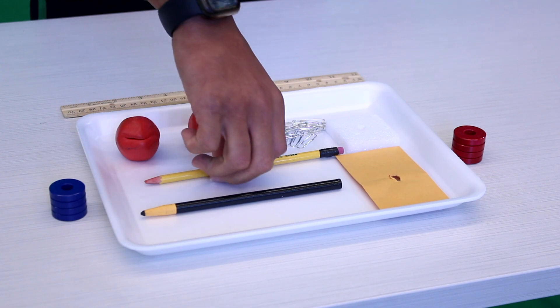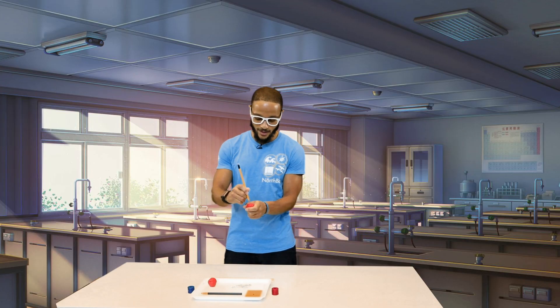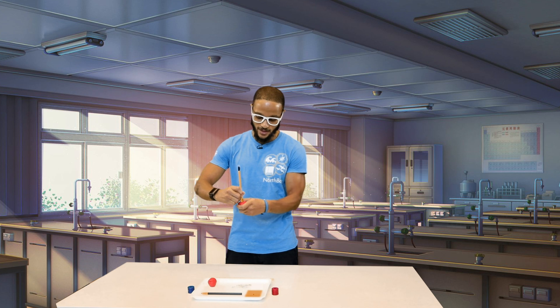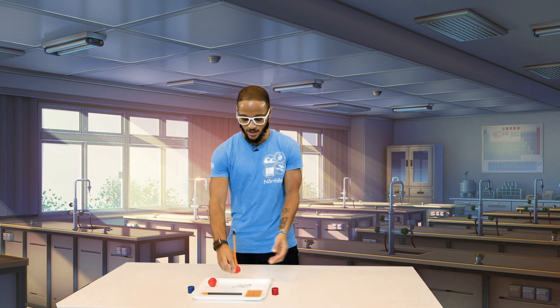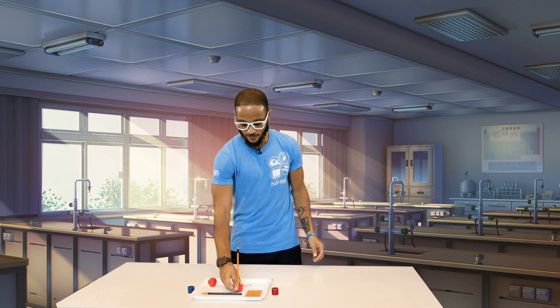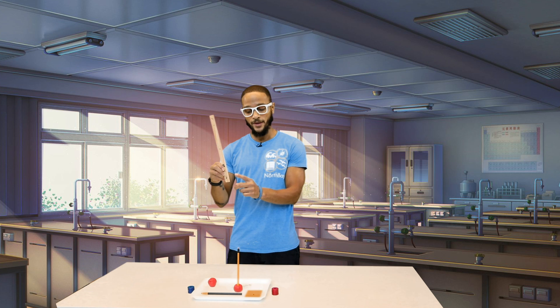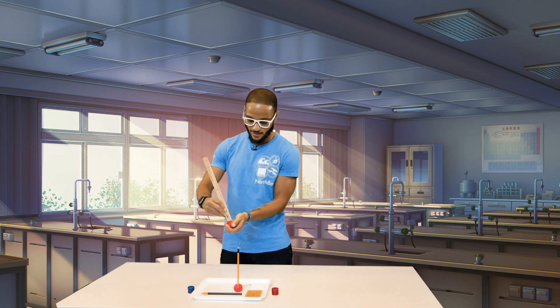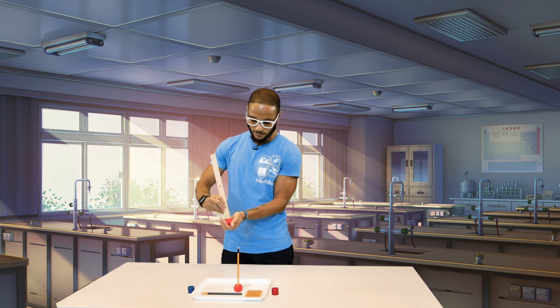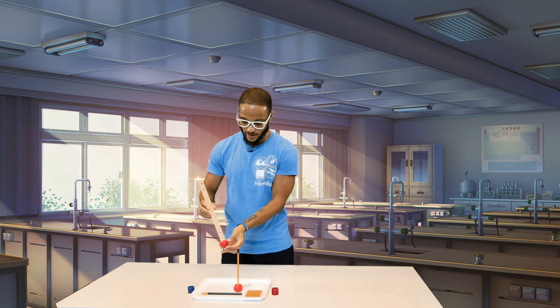First thing you're gonna do, you're gonna take your pencil and you're gonna stick it right inside the center of your clay so that it can stay standing straight up, and you're gonna do the same with your ruler. Be sure that the one is facing down.